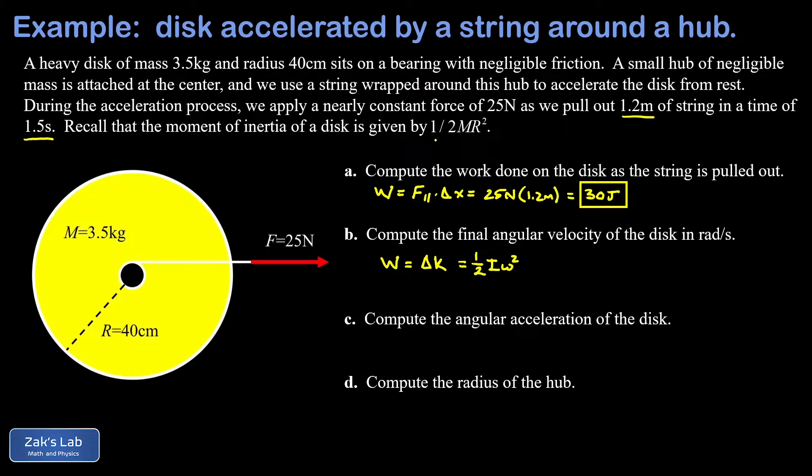Now we are reminded in this problem that the moment of inertia of a disk is one-half MR squared. So we sub that in. I'll go ahead and just pop numbers in right now and then we'll solve for omega. So the work that we put in was 30 joules. Then I have a one-half times one-half or one-fourth. The mass of the disk, 3.5 kilograms. The radius was 0.4 meters, just switching to SI units there. And we have to square that. And then we have an omega squared.